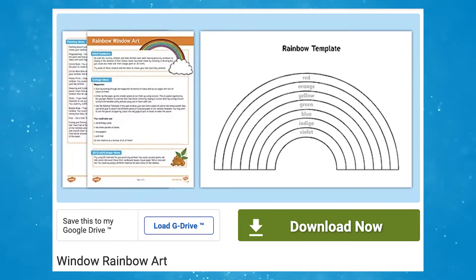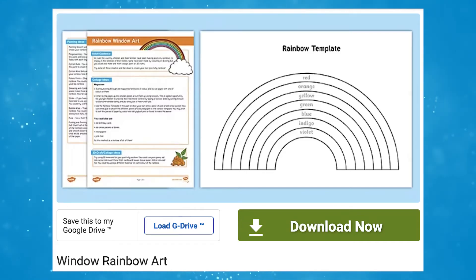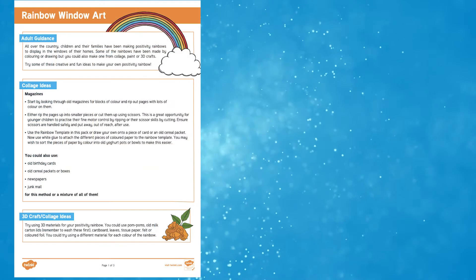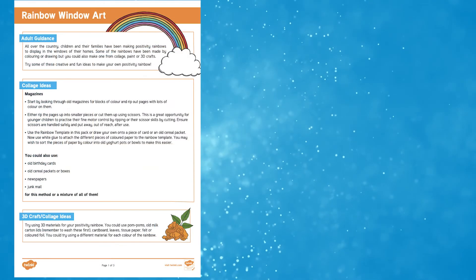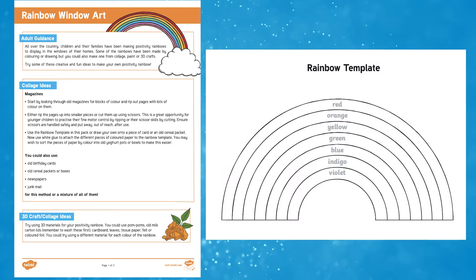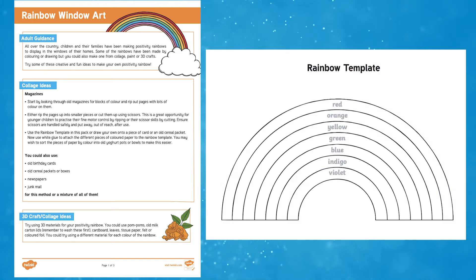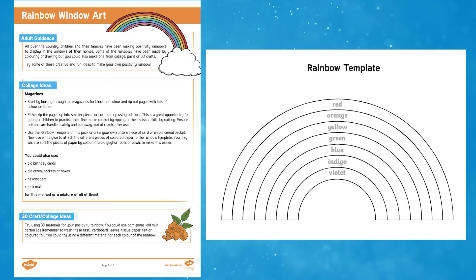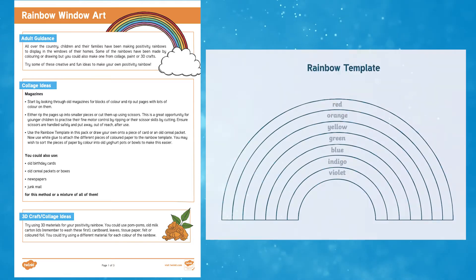In addition to this presentation we also have our window rainbow art, which children can display in their windows as a sign of positivity and something for children to look out for whilst they're outdoors. You can use the ideas in this pack to create your own rainbow art to display in your windows.